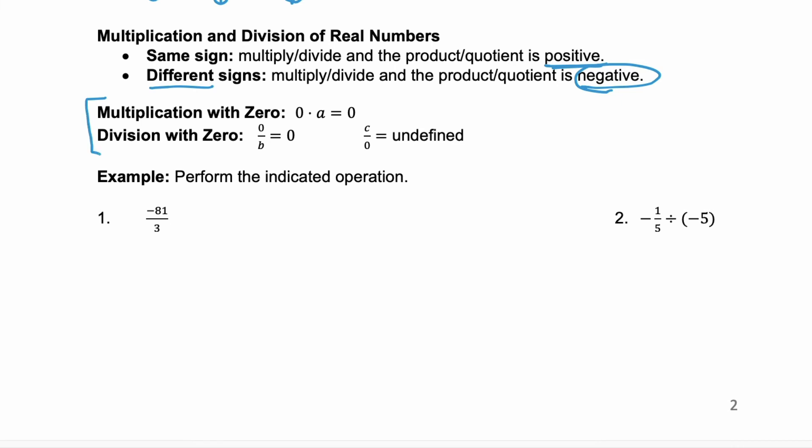And you have to remember multiplication of 0, anything times 0 equals 0. And probably the trickier ones are division with 0. 0 divided by b equals 0. So if you have 0 cookies and you share it with 7 friends, everybody still gets 0 cookies. But 7 cookies divided by 0 friends is undefined.